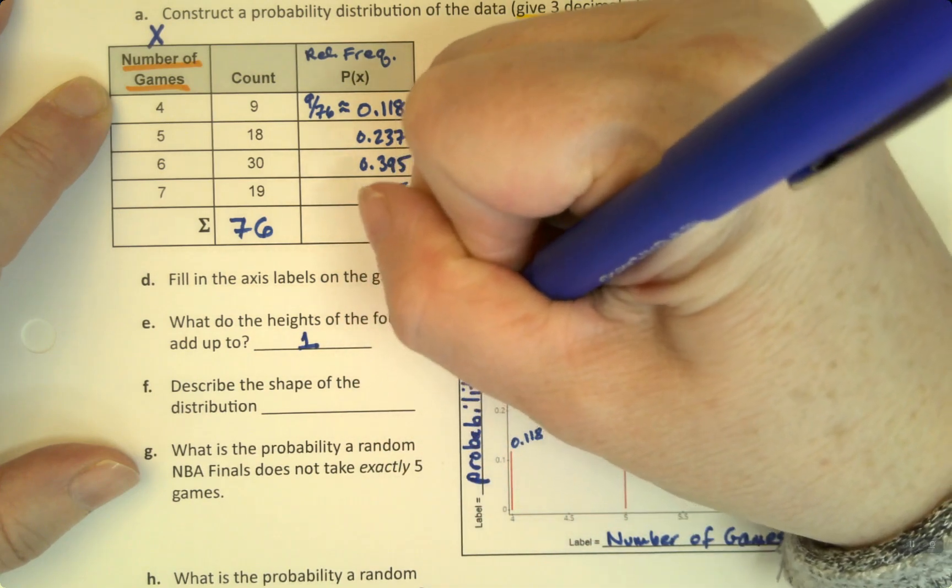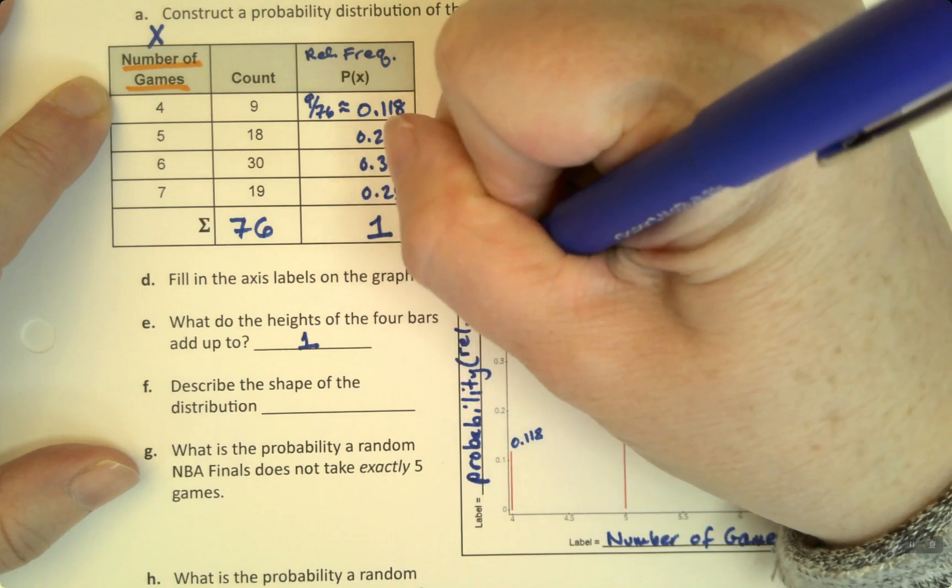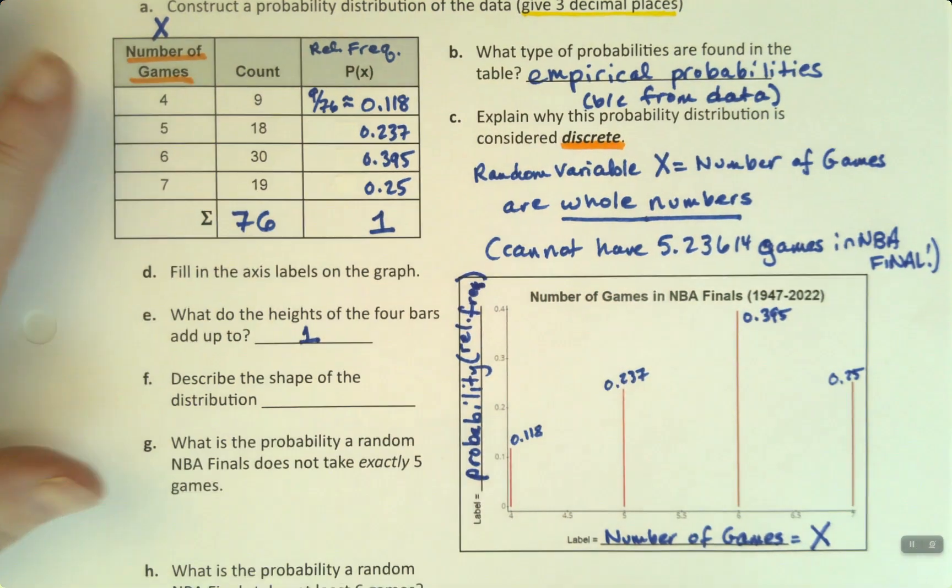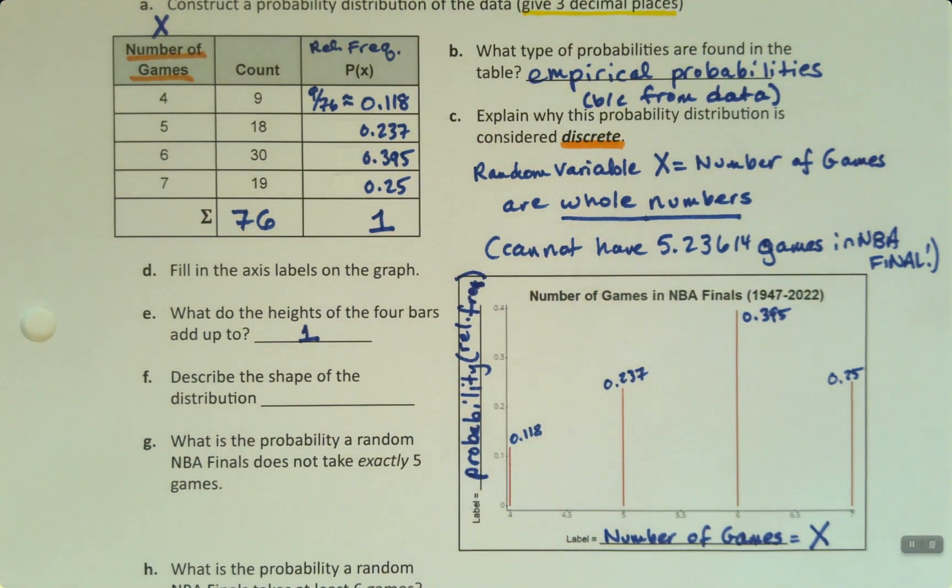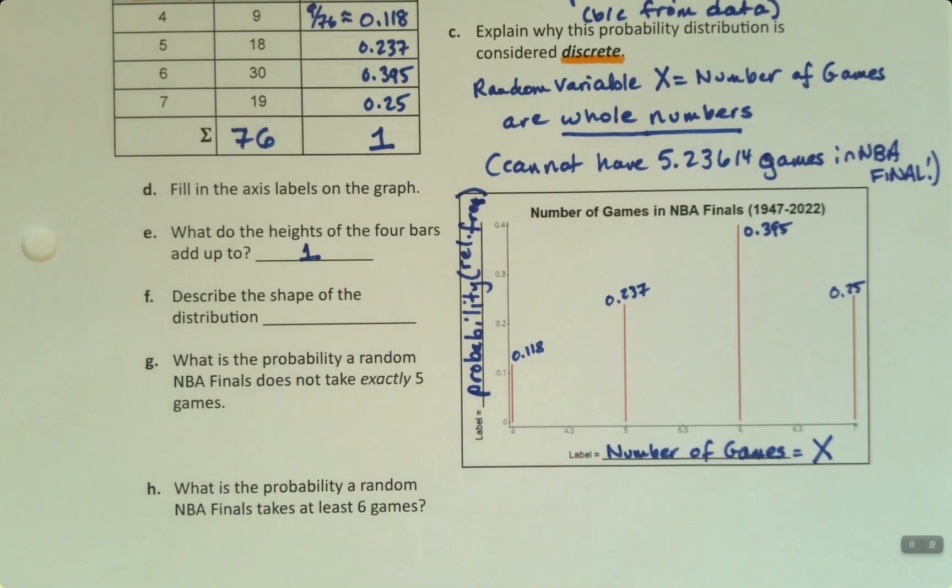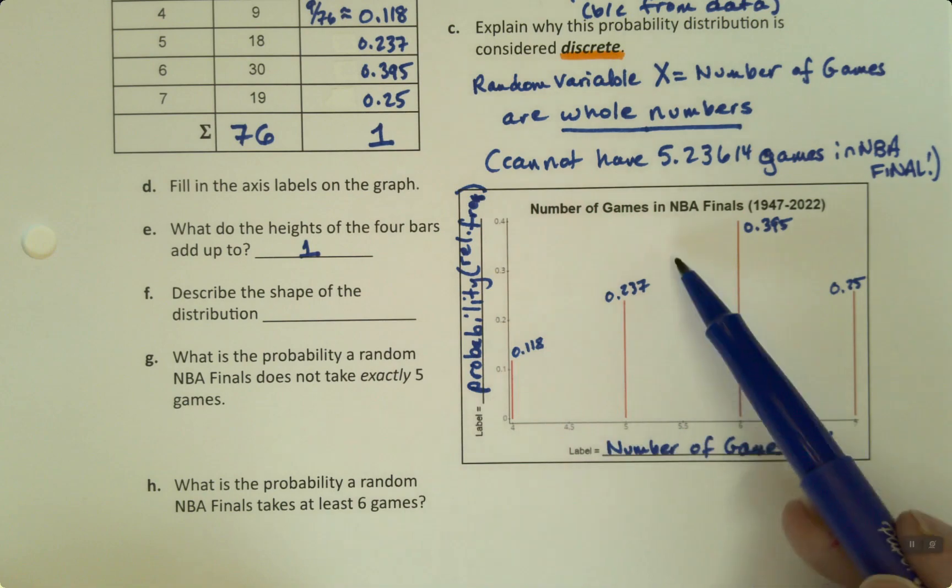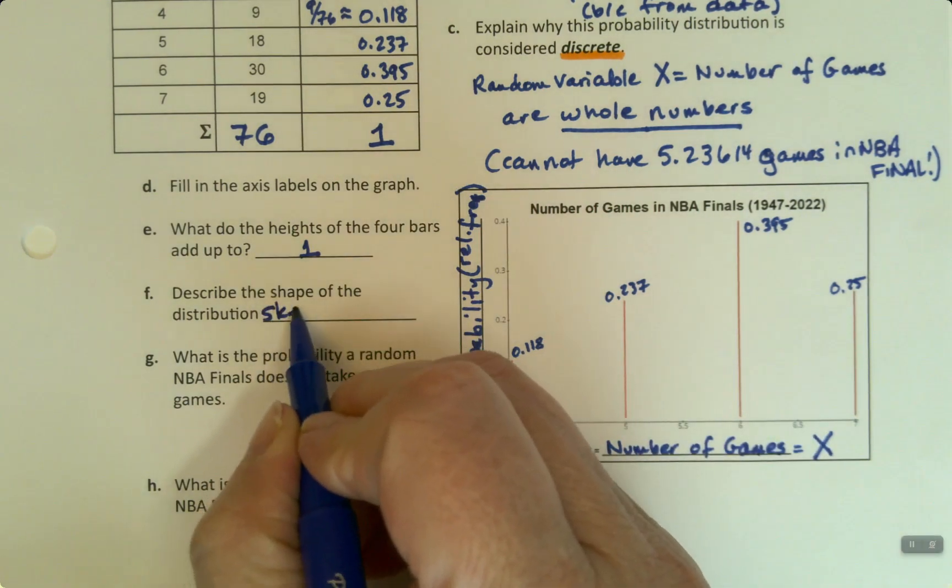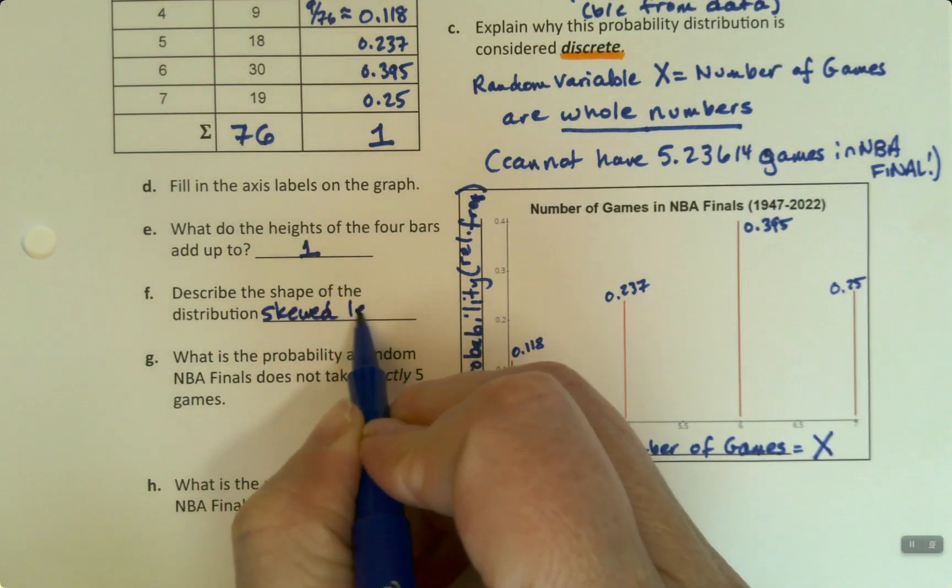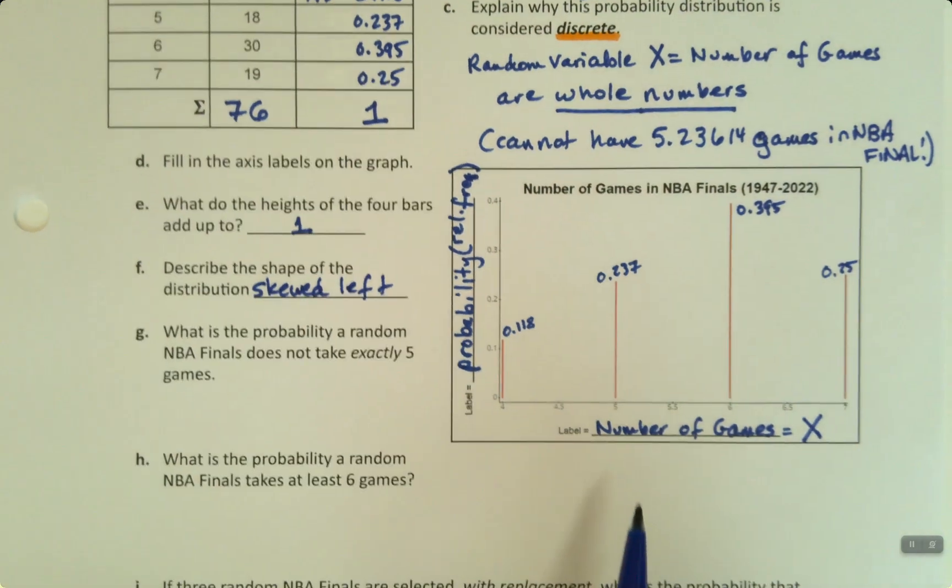Over here is your probability, or in other words, your relative frequency. Tomato, tomato, right? They're the same thing in this case. Now, we're going to describe the shape of this distribution. It's actually a little bit skewed left. There's a little bit of a tail over here.